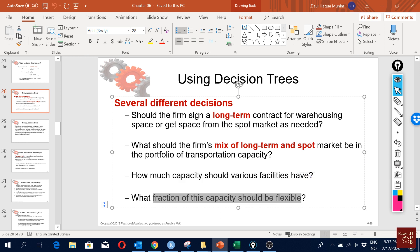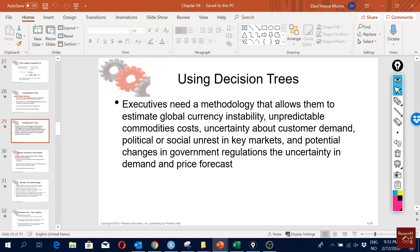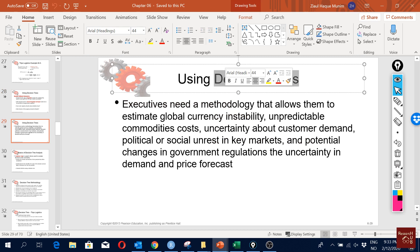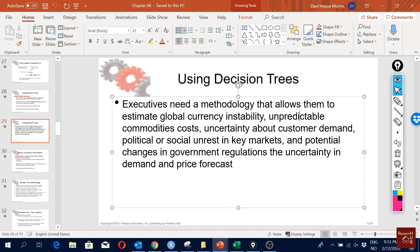What fraction of the capacity should be flexible? We also want to see these kinds of issues. Now we will be doing this using something called decision trees.